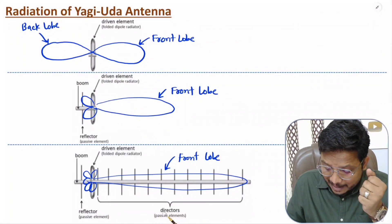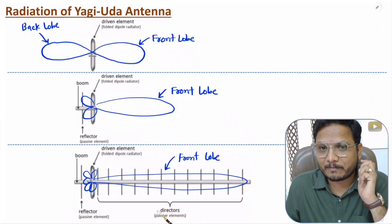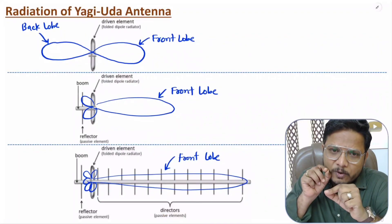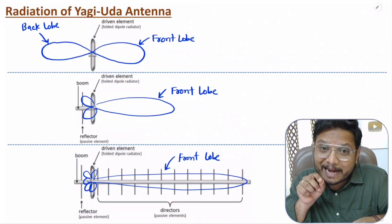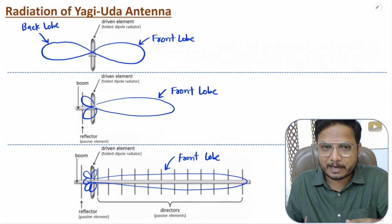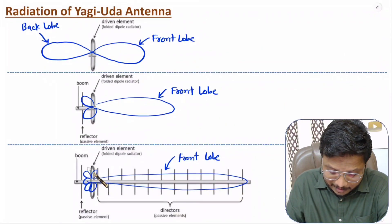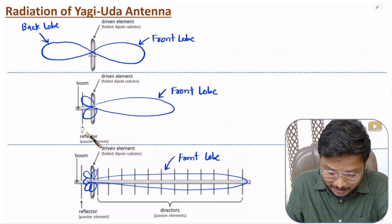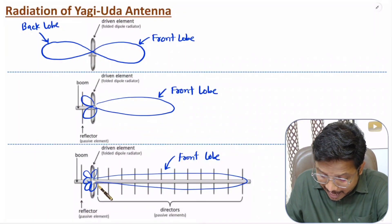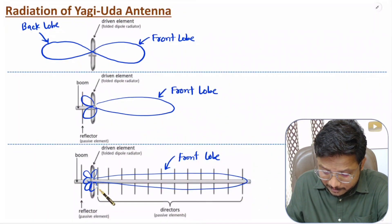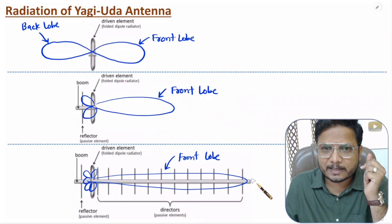The directors provide impedance matching. Because of impedance matching, whatever power is going in the front direction will have higher directivity — it attracts power towards the front direction. So the director element has higher impedance matching and the reflector element has impedance mismatch. Because of this, the resultant structure of Yagi-Uda antenna has directional radiation characteristics, radiating higher power in the forward direction. That is how radiation happens.